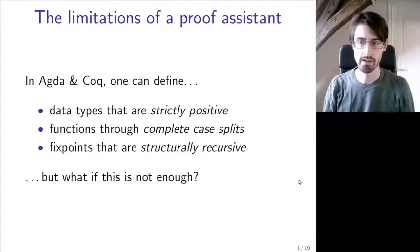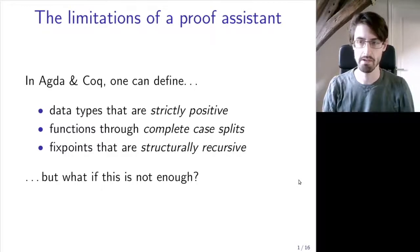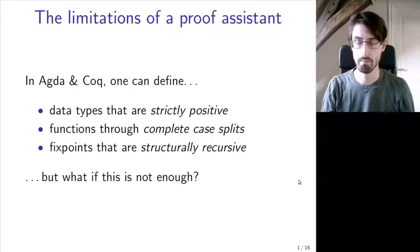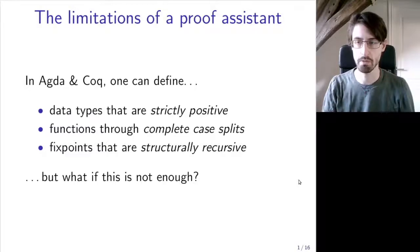In a proof assistant such as Agda or Coq, we typically get access to a few very general mechanisms that allow us to define types as well as functions over these types. For example, we can define inductive data types as long as they satisfy a certain strict positivity condition. We can define functions over these data types by doing complete case splits that cover all the cases. And finally, we can also define recursive functions as fixed points as long as they satisfy a certain termination criterion such as structural recursion.